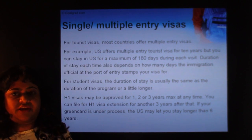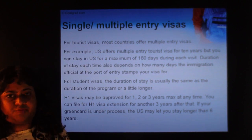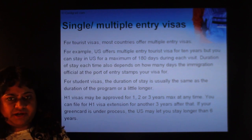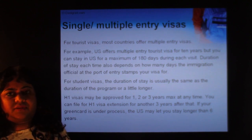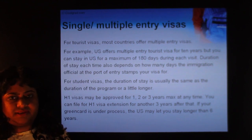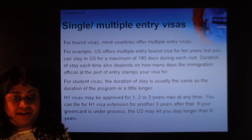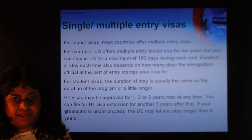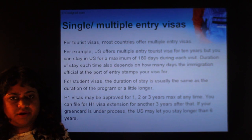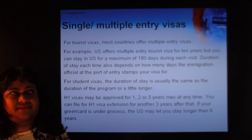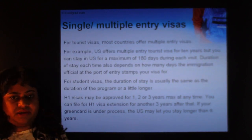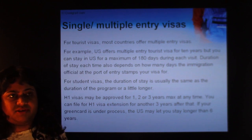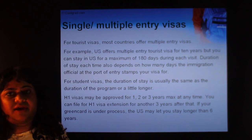If you plan to file for an H-1 visa, have all your documentation ready and a company ready to sponsor you by end of March. After filing on April 1st, approval takes a few weeks to a couple of months, and you can only start working in October. Having a master's degree puts you in the special 20,000 category, boosting your chances significantly. It's always good to have a master's degree.